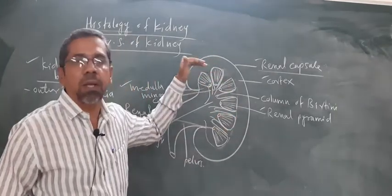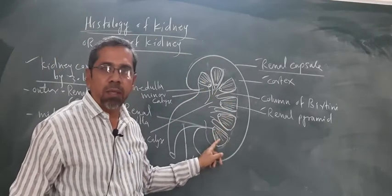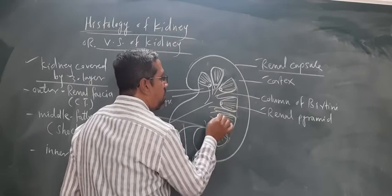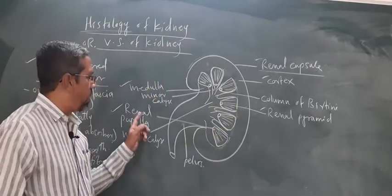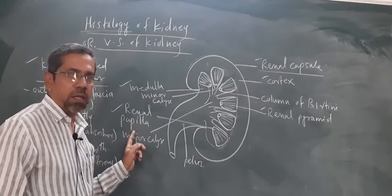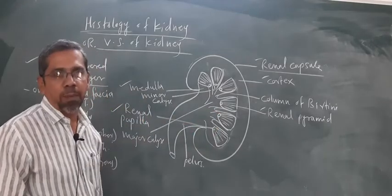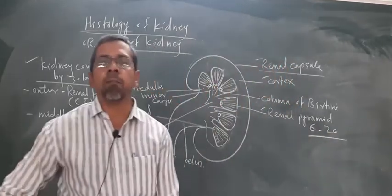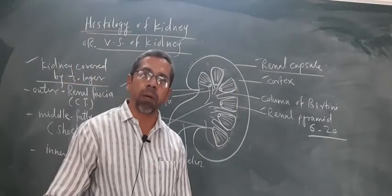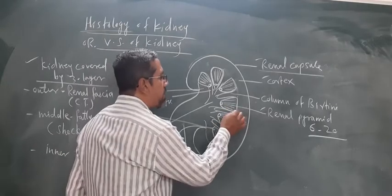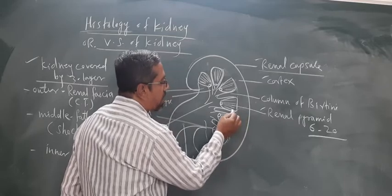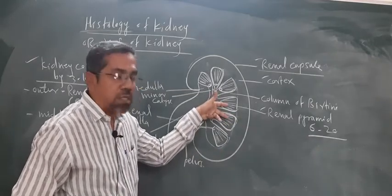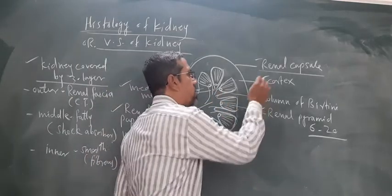Blood का ultra filtration का process जो renal tubules के जरिए होता है, वो renal pyramid के अंदर होता है, जिसके बाद urine का formation होता है। Pyramid का tip पर एक small pore present रहता है, जिसे renal papilla कहते हैं। Number of renal pyramids कम से कम 6 और maximum 20 होते हैं। दो renal pyramids के बीच cortex का extended part जो medulla तक पहुंचता है, उसे column of Bertini कहा जाता है।